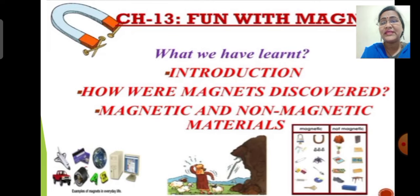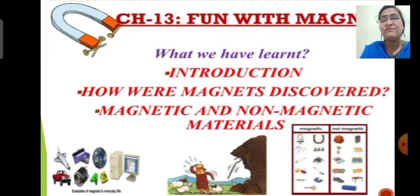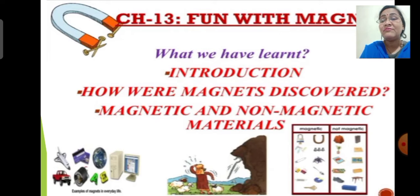Before we begin today's class, let us have a small briefing of topics that we learnt in this chapter till now. We have learnt the definition of magnets, the purpose that magnets serve, and an interesting story about the discovery of magnets. Then in the online session we have seen about naturally occurring and man-made, or artificial, magnets. Then we have seen the different shapes of magnets and also about the magnetic and non-magnetic materials through activity.